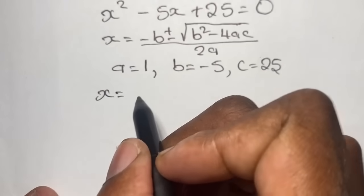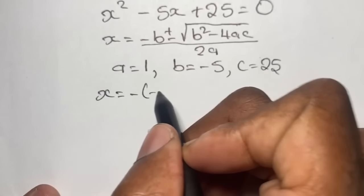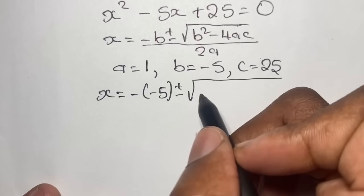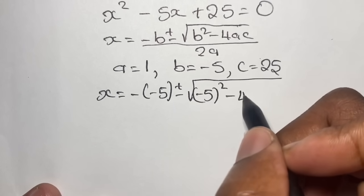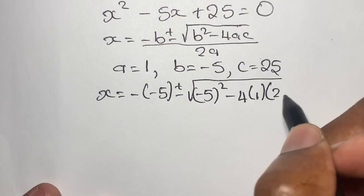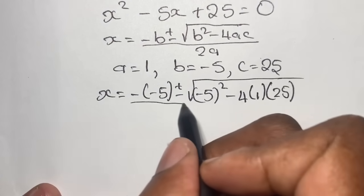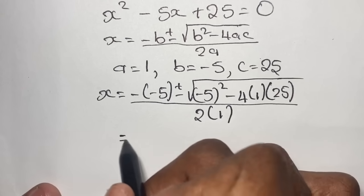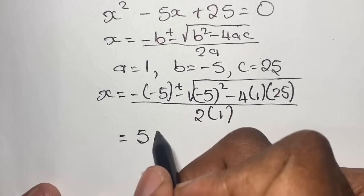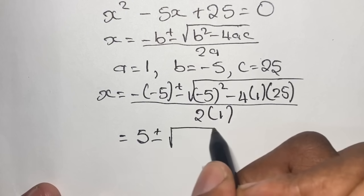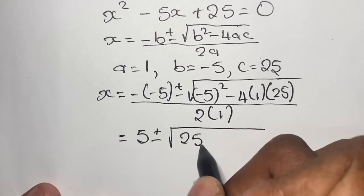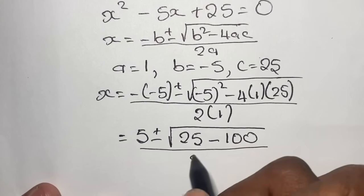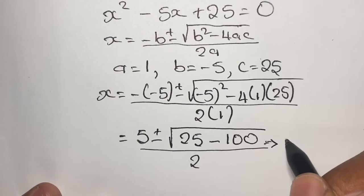We solve for x using the quadratic formula: x equals negative b plus or minus the square root of b squared minus 4ac, all over 2a. Plugging in the values: x equals negative of negative 5, plus or minus the square root of negative 5 squared minus 4 times 1 times 25, all over 2 times 1. Evaluating: positive 5 plus or minus the square root of 25 minus 100, all over 2.